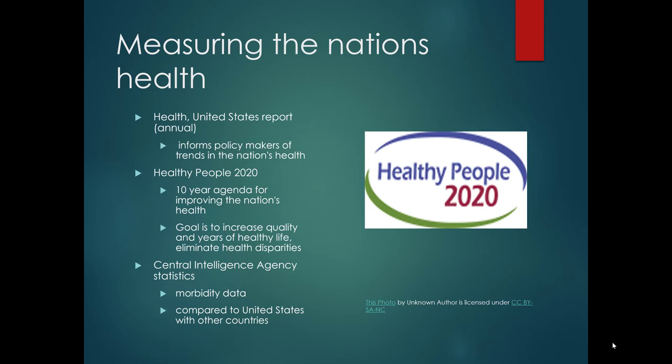Several graphics in your chapter demonstrate the kinds of information collected and displayed for policy makers and the public to understand the nation's health. Healthy People 2020 and now Healthy People 2030 are 10-year agendas for improving the nation's health. The goal is to increase the quality and years of healthy life and eliminate health disparities. The Central Intelligence Agency collects statistics and publishes morbidity data, also comparing the United States to other countries.